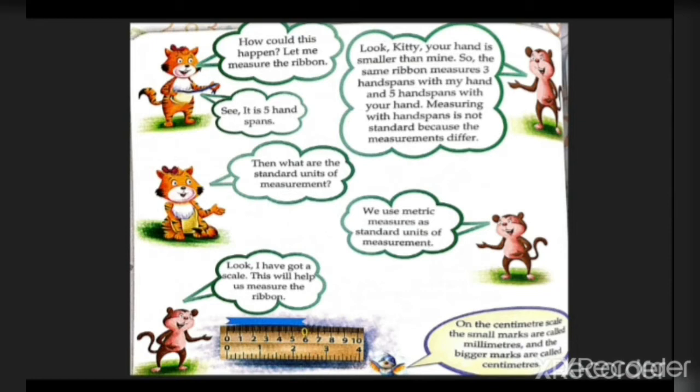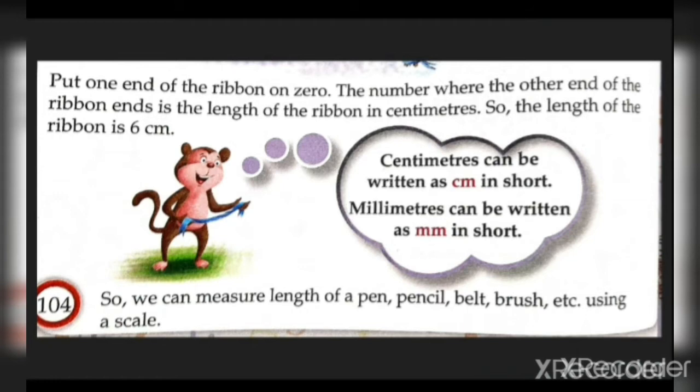On the centimeter scale, the small marks are called millimeters and the bigger marks are called centimeters. Put one end of the ribbon on zero. The number where the other end of the ribbon ends is the length of the ribbon in centimeters. So the length of the ribbon is six centimeters.